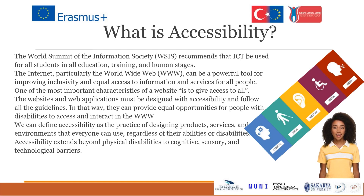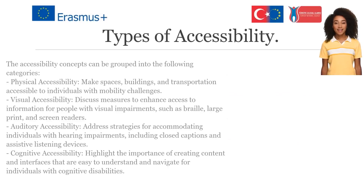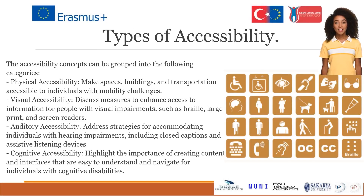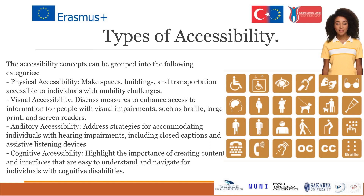We can define accessibility as designing products, services, and environments everyone can use, regardless of their abilities or disabilities. Accessibility extends beyond physical disabilities to cognitive, sensory, and technological barriers. The accessibility concepts can be grouped into: physical accessibility — making spaces, buildings, and transportation accessible to individuals with mobility challenges; visual accessibility — measures to enhance access for people with visual impairments, such as braille, large print, and screen readers; auditory accessibility — strategies for accommodating individuals with hearing impairments, including closed captions and assistive listening devices; and cognitive accessibility — creating content and interfaces easy to understand for individuals with cognitive disabilities.